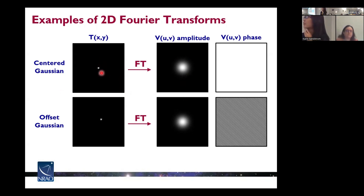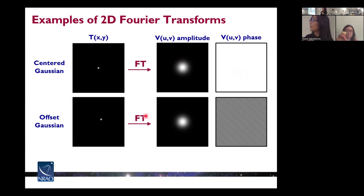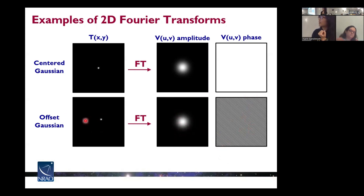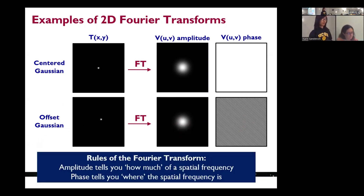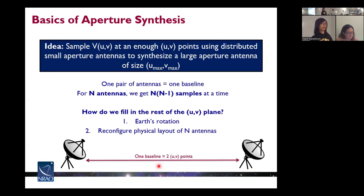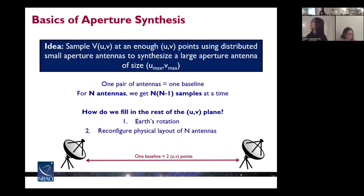A centered Gaussian will be transformed into a wider spread Gaussian in terms of amplitude. Now I want to focus on what the phase can tell us. Since this Gaussian is centered in the image, the phase will of course be zero. But if we have an offset Gaussian from the center, the amplitude will be essentially the same, but there are fringe patterns in the phase that tell us where this Gaussian is located. An important note: amplitude tells you how much of a spatial frequency, and phase tells you where the spatial frequency is. The image is simply the Fourier transform of the UV space, which is sampled by the antenna arrays.